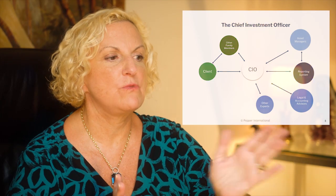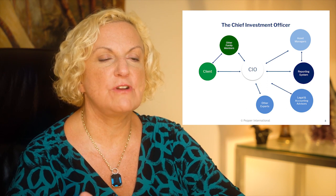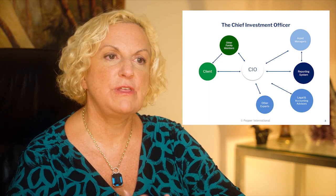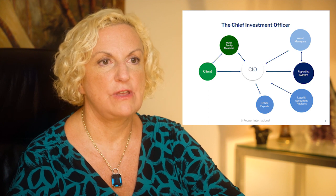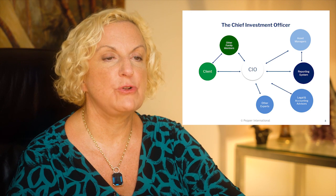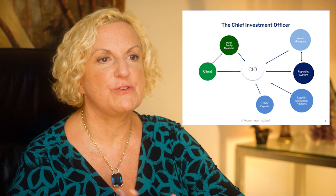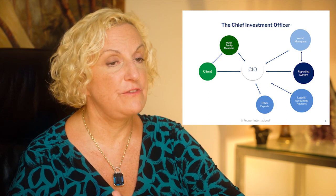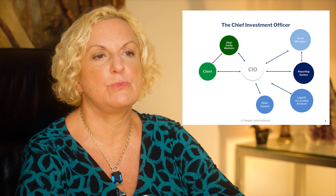Here we have a picture of what it would look like to have a chief investment officer. This person would have a reporting system and would interact with all the asset managers that are hired on behalf of you, and they would give some of the information required to legal or accounting advisors or other experts, and then would present to you and to the various family members the results of the investments. So if you have, for example, multiple trusts with different beneficiaries, the consolidated reporting system will create the right report for each beneficiary — perhaps the head of the family sees all the trust information while each beneficiary sees what is important for him or her.